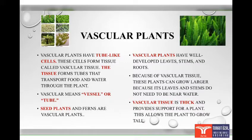Seed plants and ferns are vascular plants. Vascular plants have well-developed leaves, stem and roots. Because of vascular tissue, this plant can grow larger, because its leaves and stems do not need to be near water. Vascular tissue is thick and provides support for a plant.